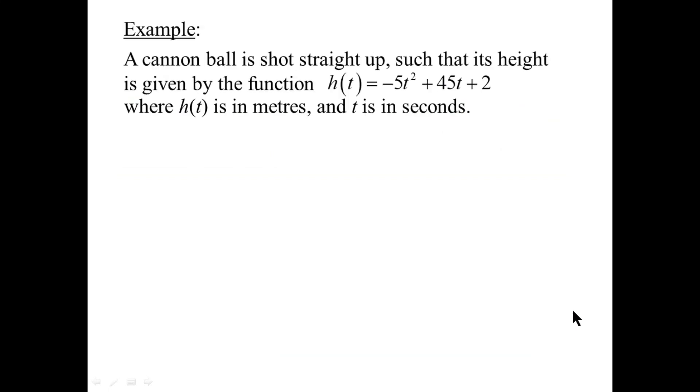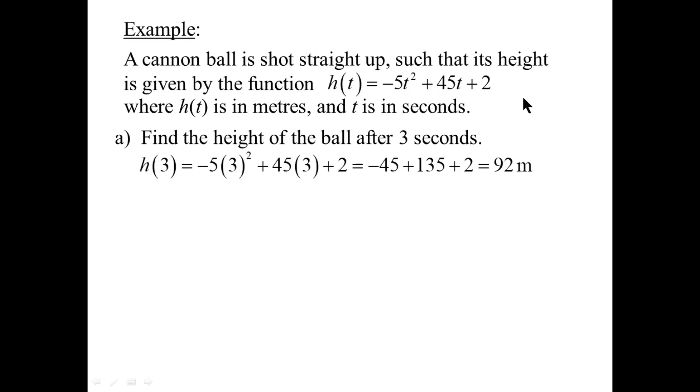Here's an example. A cannonball is shot straight up, such that its height is given by the function h of t equals minus 5t squared plus 45t plus 2. So instead of f of x, we have h of t. It's a parabola that opens down. h of t is in meters, and t is in seconds. Find the height of the ball at 3 seconds. Very easy to do. Sub in 3 for t. 92 meters.